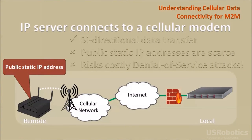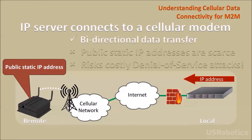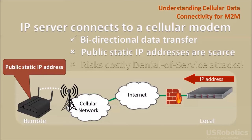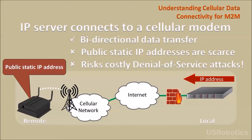If an application requires that the server initiates the connection to the remote cellular modem, one possible solution is to provision the cellular modem with a public static IP address. Once the connection is made, data can transfer across the connection in either direction. While this approach is achievable technically, it may not be practical. Public static IP addresses are not available from all cellular service providers or may cost extra. Also, the cellular modem at a public IP address on the internet is vulnerable to denial of service attacks, which can cause expensive overage charges on your cellular data plan.